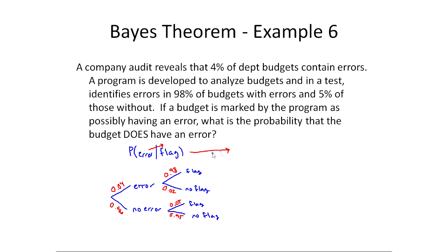Well, to go from an error to a flag would be 0.04. So I kind of look on the tree diagram. This is a very informal way of thinking about it, 0.04 times 0.98.